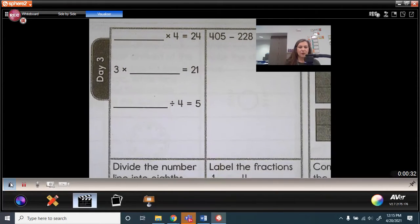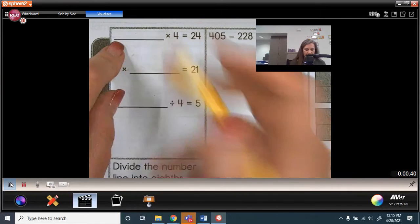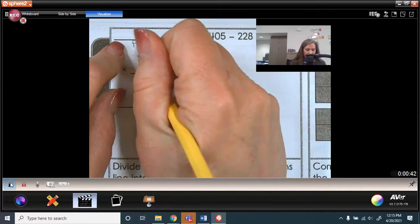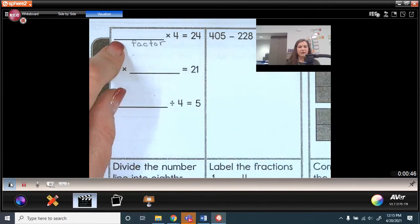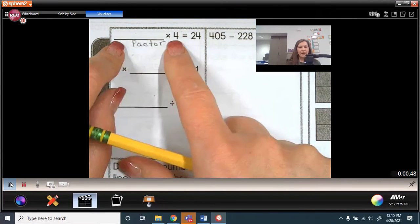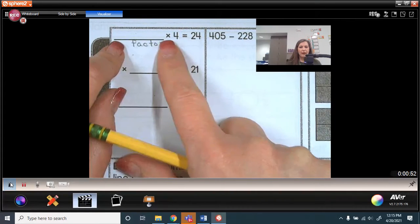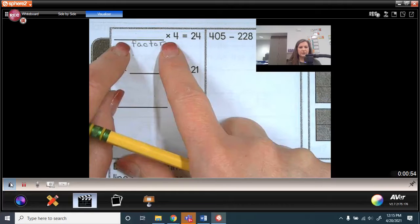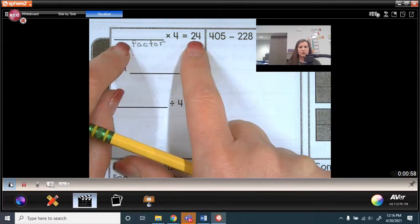So if you notice here, we have some missing numbers in our equations. We're missing the factor here. Remember that when you're multiplying numbers, these are called factors. So this is a factor, and this is your product. We want to know how many groups of 4 it takes to make 24.